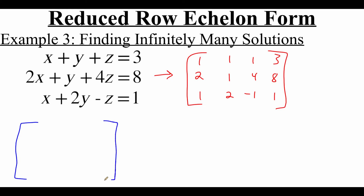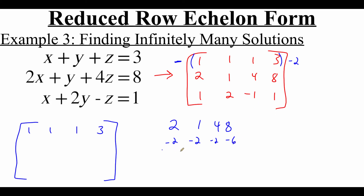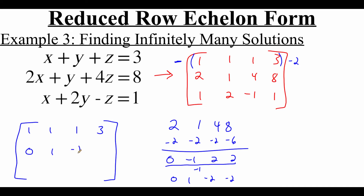For row echelon form, the top row needs a leading one in the first column, and it does, so we leave it as one, one, one, three. For the middle row — two, one, four, eight — we need to zero out that two in the first entry, so we need a negative two. Taking the top row times negative two gives negative two, negative two, negative two, negative six. Adding these together gives zero, negative one, two, two. We want that negative one to be a positive one, so we divide by negative one to get zero, one, negative two, negative two — and that's our new second row.